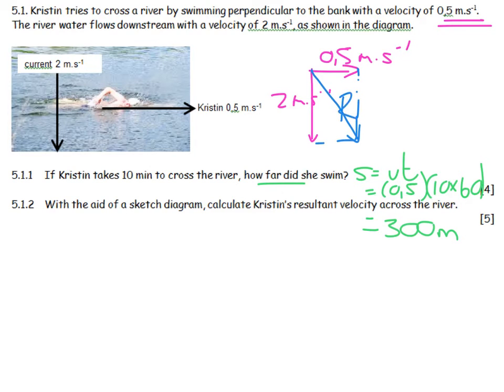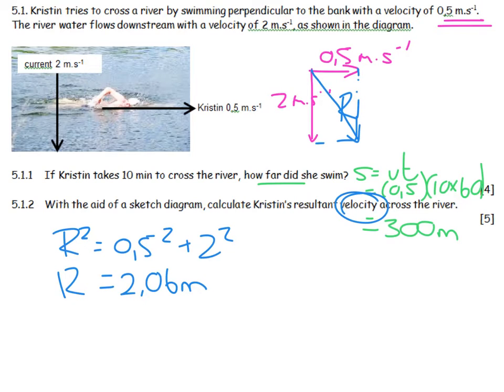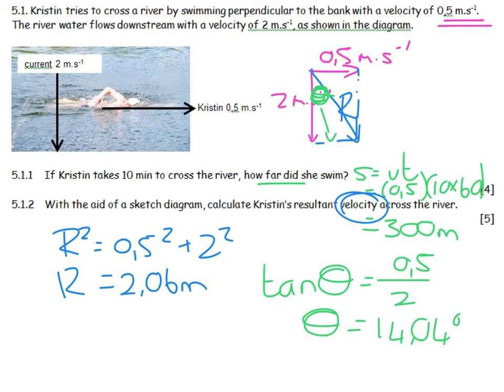Calculate the resultant. The resultant is the diagonal. No problem. I can see that that's a Pythagoras story. R squared is equal to 0.5 squared, plus 2 squared. So R turns out to be equal to 2.06 meters. But if I'm finding velocity, I need a direction as well. So I better choose an angle. And I'm going to choose this angle over here. And I'm going to call it theta. And then I'm going to say that tan of theta is equal to the opposite side, which is 0.5, divide by 2, and my theta turns out to be 14.04 degrees.